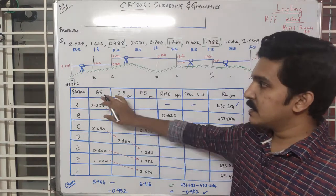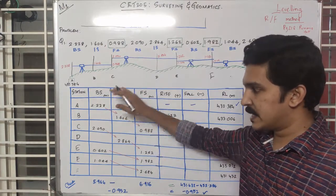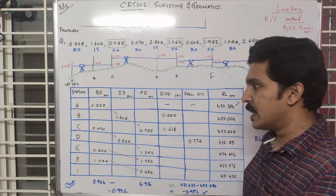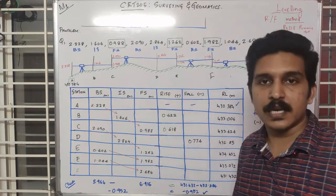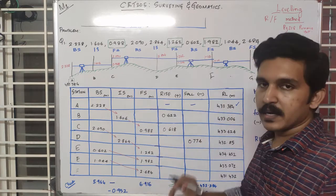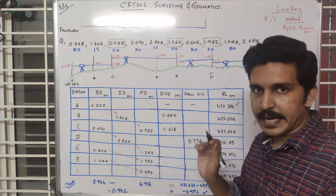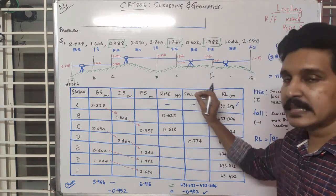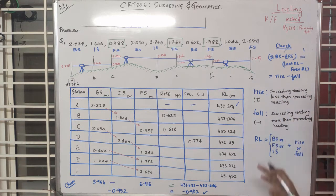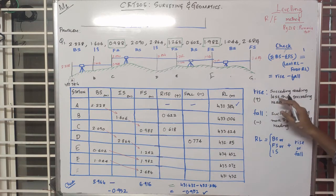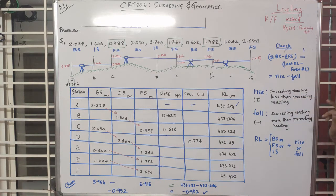We have the back sight, the intermediate sight, and the fore sight columns. In the rise and fall method, rise is a positive value and fall is a negative value. When the succeeding reading is less than the preceding reading, that is a rise item.